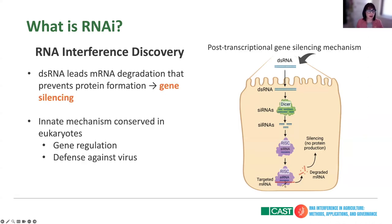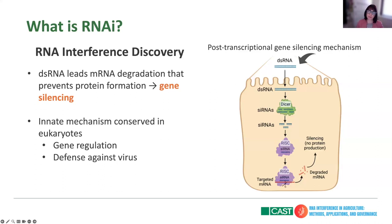So RNA interference means that double-stranded RNA leads to messenger RNA degradation, which prevents protein formation — what we call gene silencing or gene knockdown. This mechanism is innate in eukaryotes and is conserved; it's used for gene regulation. For example, if an organism has too much of one enzyme, it produces double-stranded RNAs to silence that messenger RNA. It's also used as a defense against viruses.